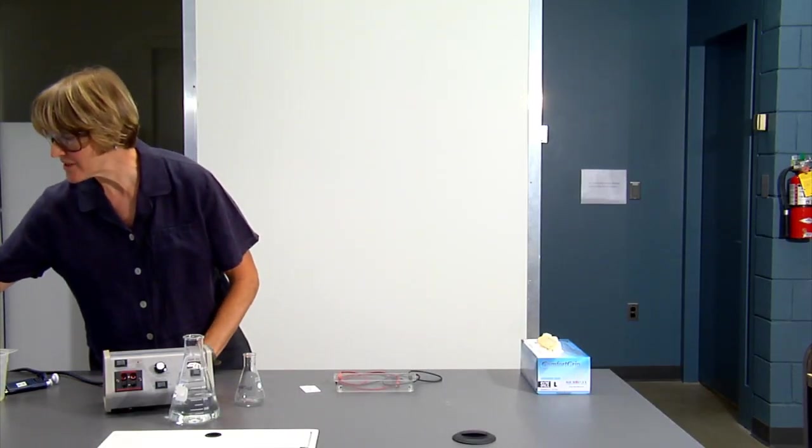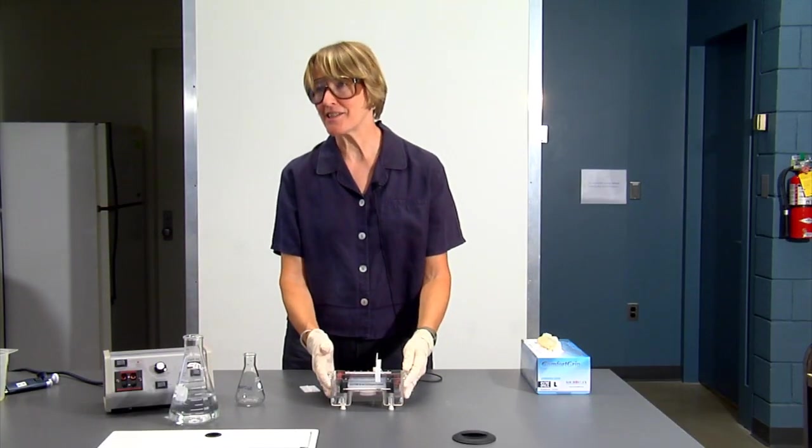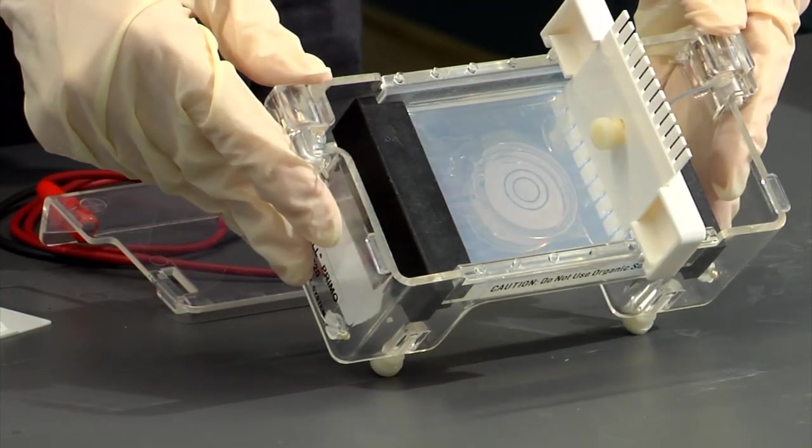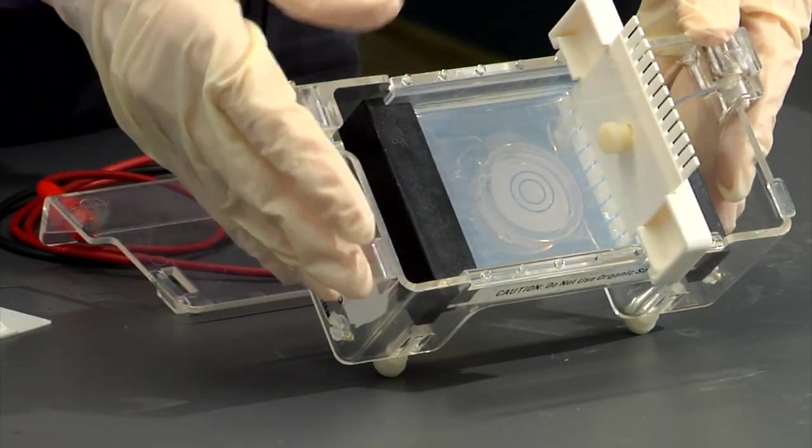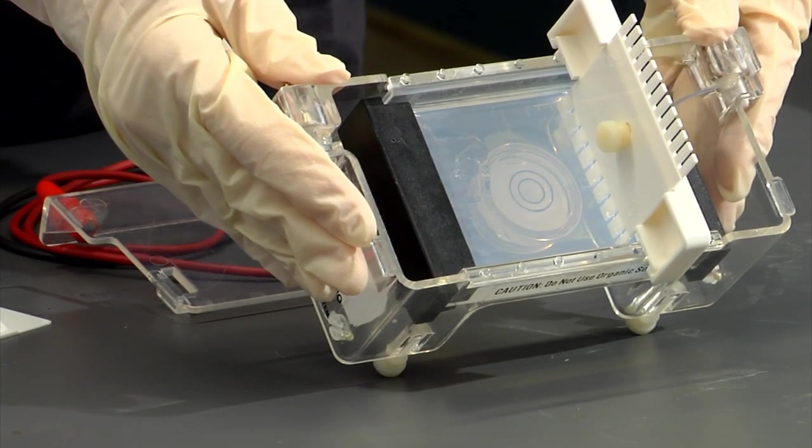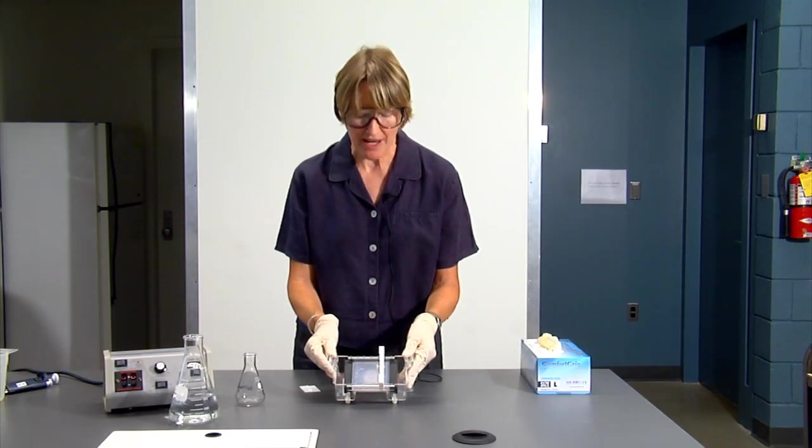While we're waiting for the gel to harden, you can set up your samples. Just like in the cooking shows, we have an already solidified gel. As you can see, the gel is opaque and has solidified. This is a 2% agarose gel. This gel acts as a matrix through which the DNA will migrate and will be separated by size.